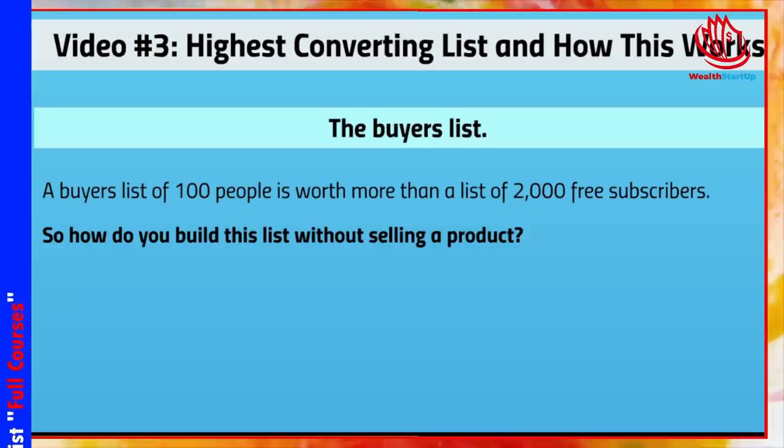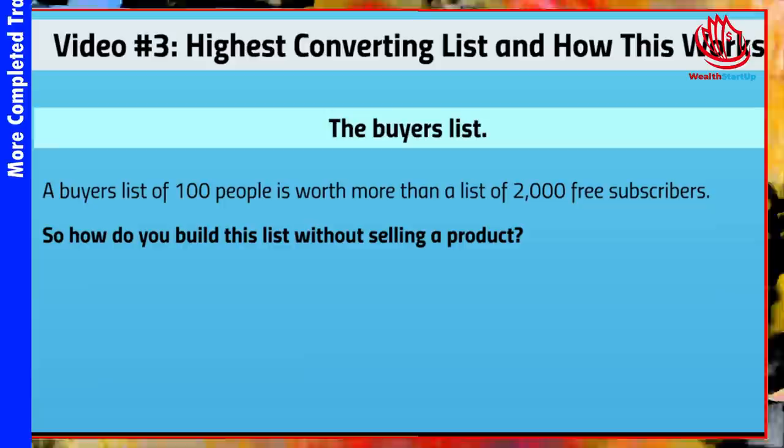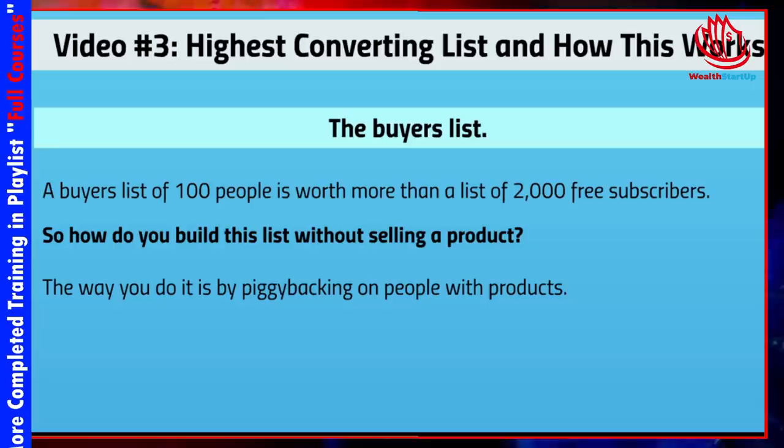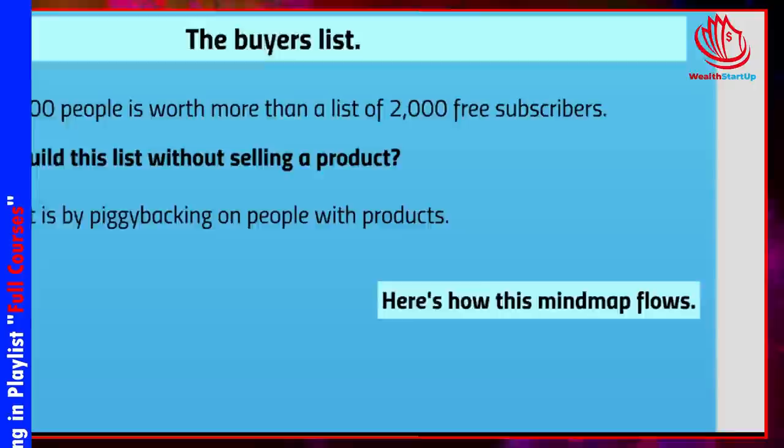How do you build a list without selling a product? That doesn't really make sense — but after I show you, it will. The way you do this is by piggybacking on people with products, so vendors. Basically, somebody purchases a product from a vendor — not you — and you've worked out a deal with that vendor who is selling something very specific. For example, if you approach somebody selling a recipe book, you want to sell something related but not in direct competition.